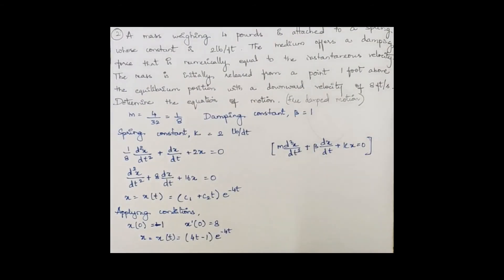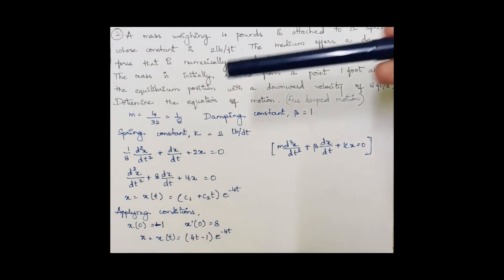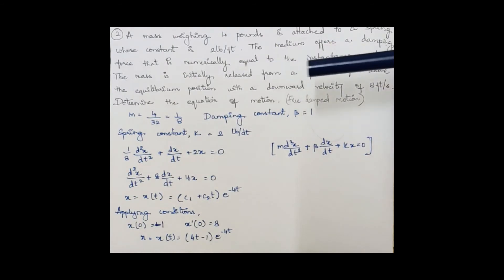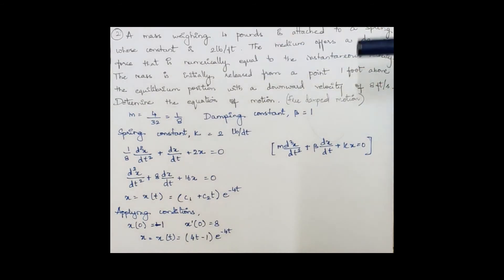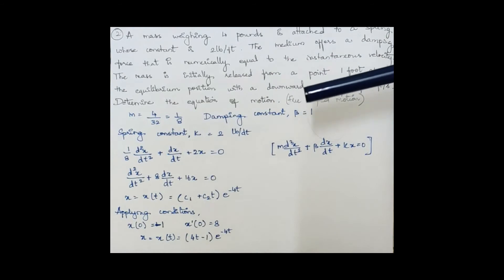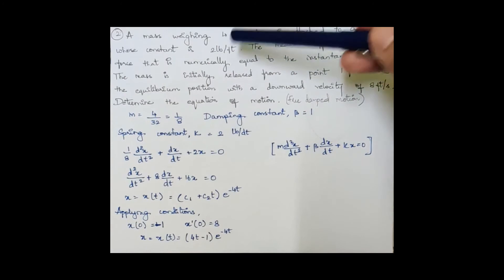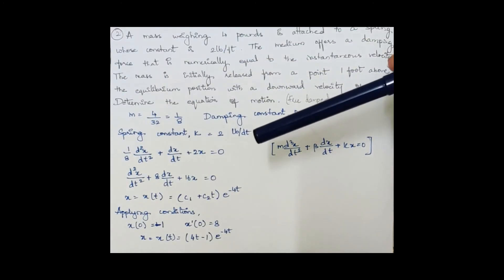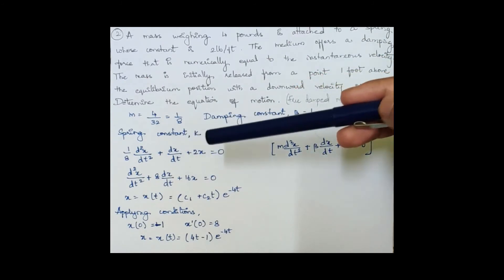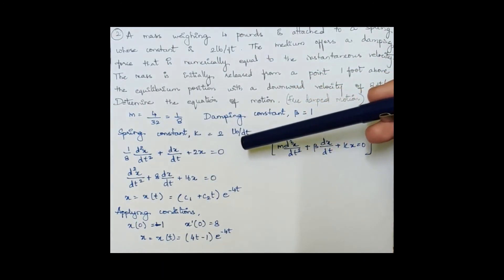Here's another example: a mass weighing 4 pounds is attached to a spring with constant k = 2. The medium offers a damping force numerically equal to the instantaneous velocity. The mass is released from 1 foot above the equilibrium position with a downward velocity of 8 ft/s. Find the equation of motion. This is free damped motion, so m = 4/32 = 1/8, damping constant β = 1, spring constant k = 2. Substituting: (1/8)·d²x/dt² + dx/dt + 2x = 0.